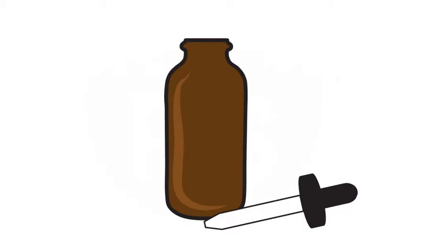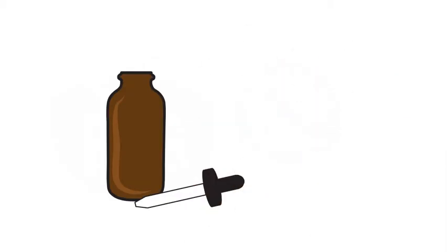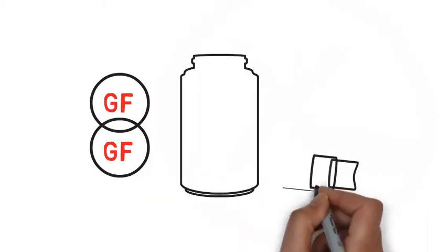We utilize amber glass bottles and droppers to store and deliver our products instead of cheap plastic packaging. This prevents the delicate growth factors from binding and becoming denatured.